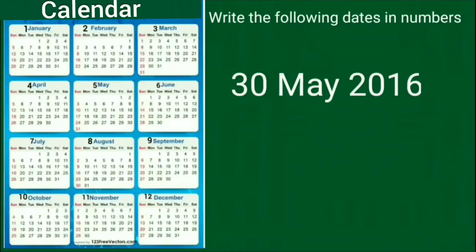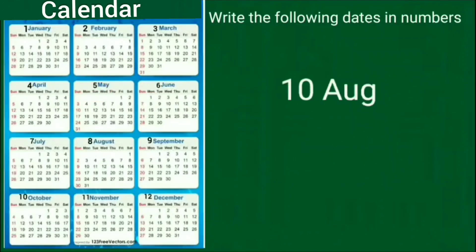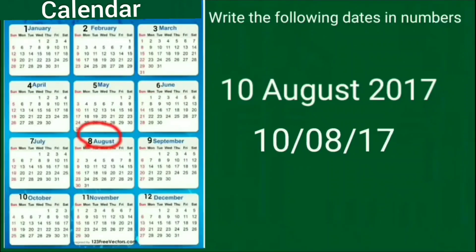Students, next is 30 May 2016. May is the 5th month of a year, so we write it as 30-5-16. Next is 10 August 2017. August is the 8th month of the year, so we write it as 10-8-17.